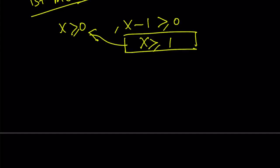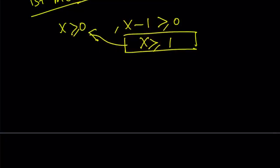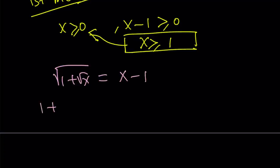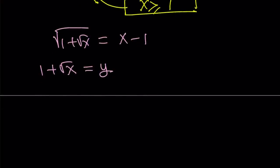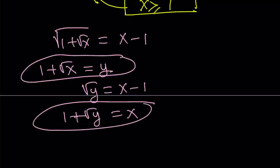The first method involves the following. I want to use substitution, so let me rewrite my original problem. Why don't we call 1 plus square root of x, y? This is going to give us something nice. So if I do that, I get square root of y equals x minus 1. Then adding 1 to both sides, we get 1 plus square root of y equals x. Notice that this was our assumption, and we got this equation. Together, they make a nice system. That's why we did this.